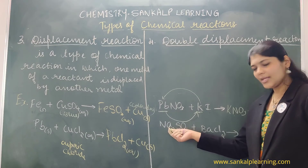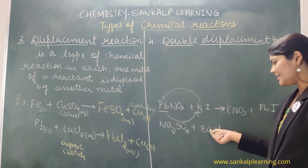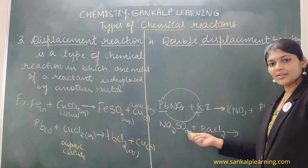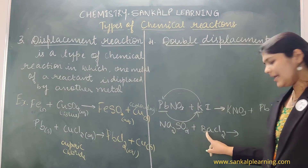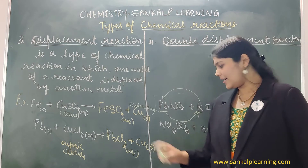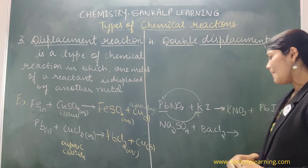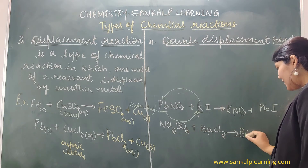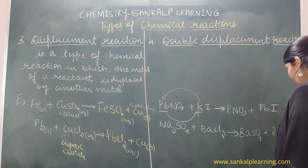Second example: sodium sulphate (Na2SO4) — sodium is a group 1 metal combined with sulphate SO4²⁻ — reacts with barium chloride (BaCl2), where barium is a group 2 metal combined with Cl⁻. There is no restriction that only same-group metals exchange; any metals can exchange. The products are barium sulphate (BaSO4) and 2 NaCl.